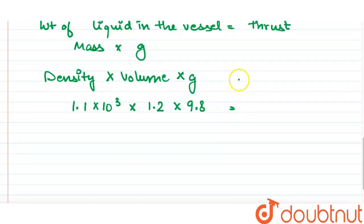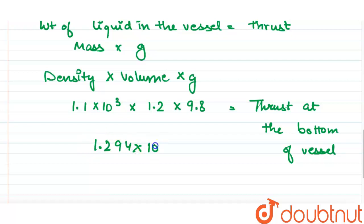This will be equal to thrust at the bottom of the vessel. Upon calculating this we will get 1.294 × 10⁴ newton. This will be our final answer. Thank you.